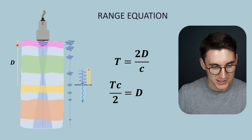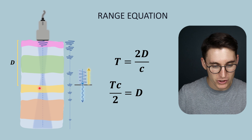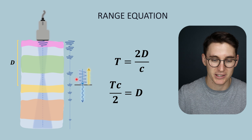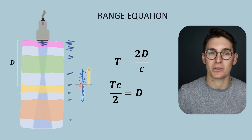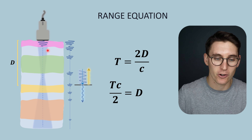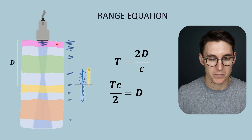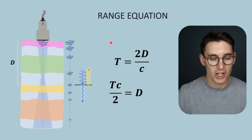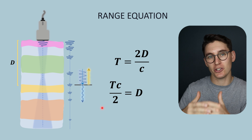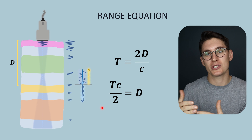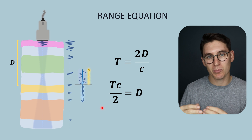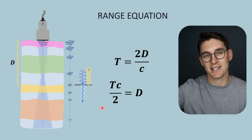Our ultrasound pulse comes into contact with a tissue boundary — some of that pulse will be transmitted through and some of it will be echoed back towards our transducer. We can use what is known as the range equation to determine this depth, and it's this equation that the ultrasound machine uses itself to plot those echoes on our screen. The time taken for that echo to come back can then be used to calculate the distance that that tissue boundary was at.